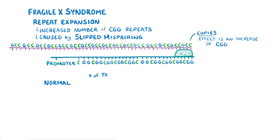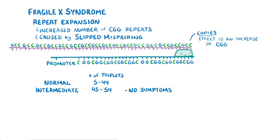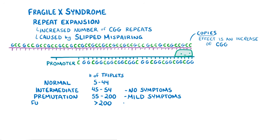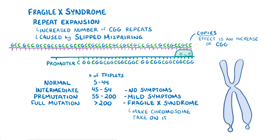The normal number of CGG repeats is 5 to 44. Alleles with 45 to 54 CGG repeats are called intermediate expansion alleles, and they don't cause any symptoms. Alleles with 55 to 200 CGG repeats are called pre-mutation alleles, and they can cause some mild symptoms. Finally, if an allele has over 200 CGGs, then it's considered a full Fragile X syndrome mutation, and can make the chromosome take on its distinctive look.